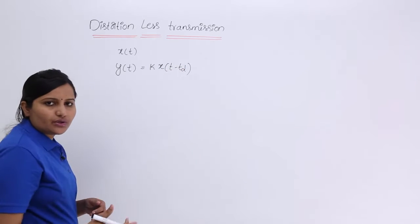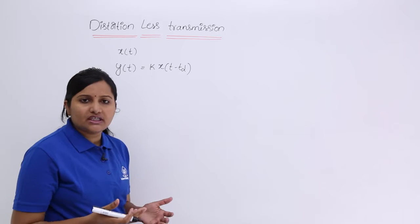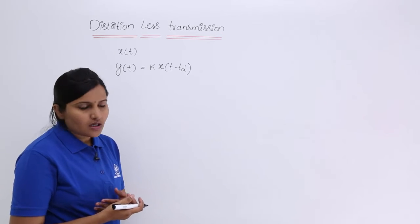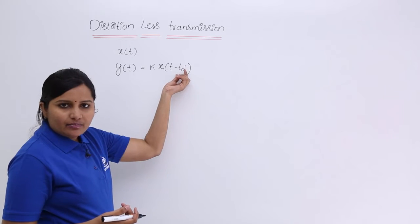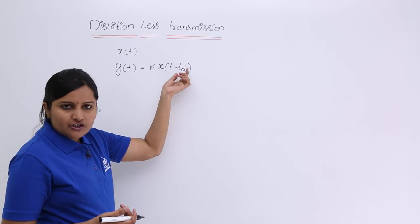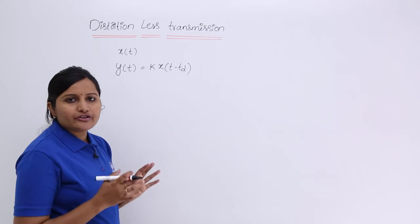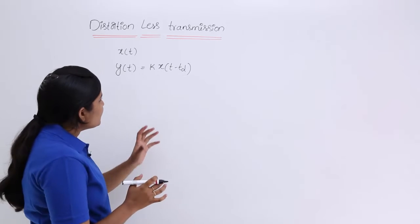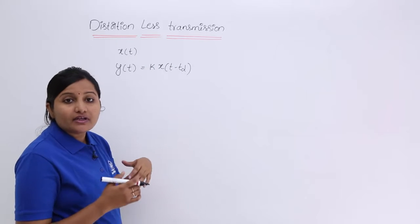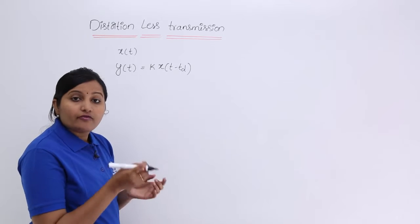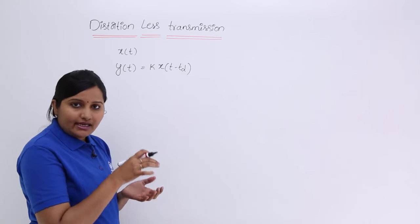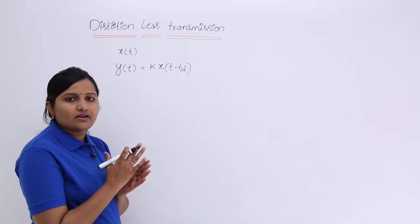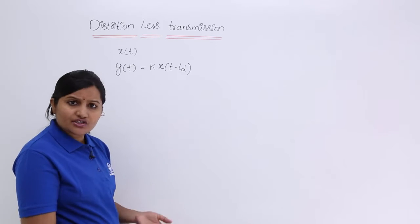TD may be 0, 1, 2, 3, and so on. K is the amplitude scaling factor, where TD is the time delay of signal transmission and K is a constant related to the amplitude. Whenever you receive the same x(t) or a shifted version of x(t) after transmitting, then you can say that is a distortionless transmission.